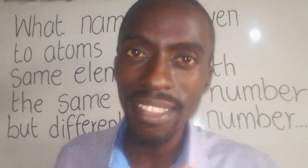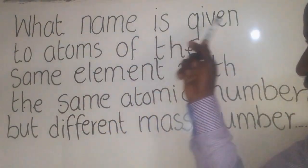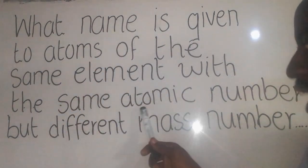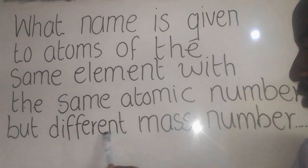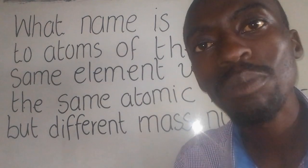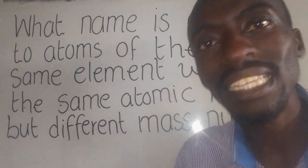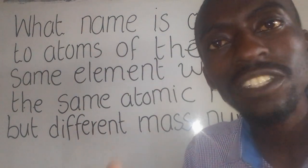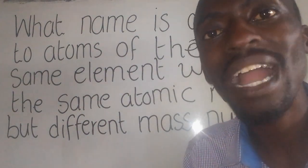We have a chemistry question that says: what name is given to atoms of the same element with the same atomic number but different mass number? You need to understand that when we talk of an atom, an atom is a small, electrically neutral, invisible particle which makes up matter. We have special types of atoms that we call isotopes.